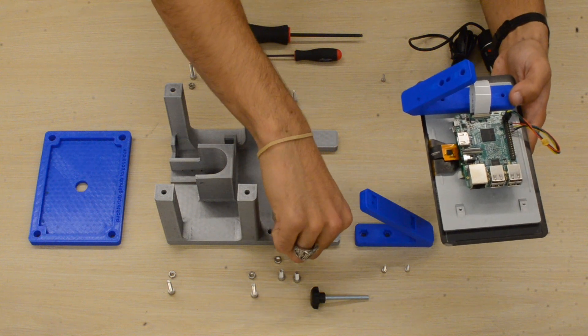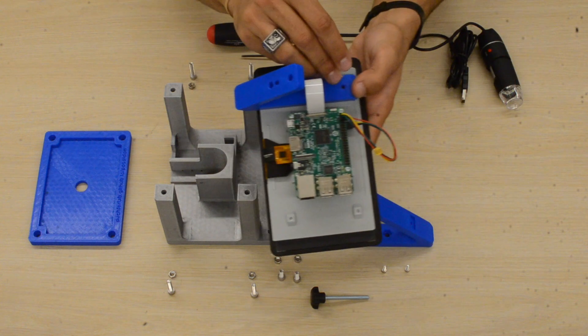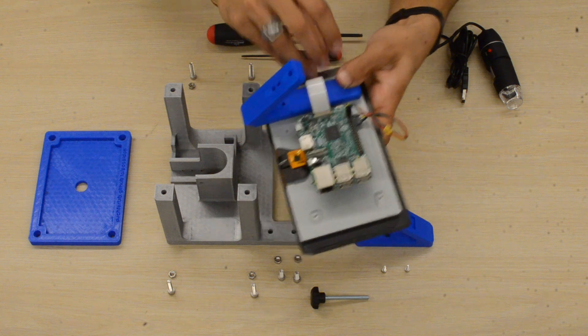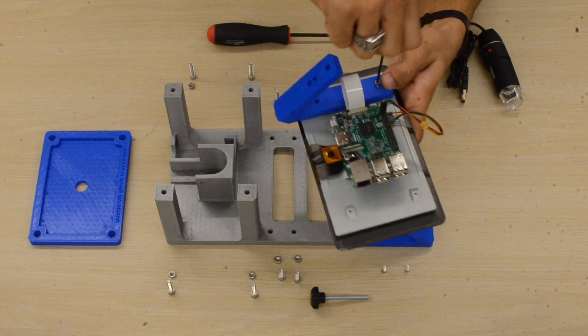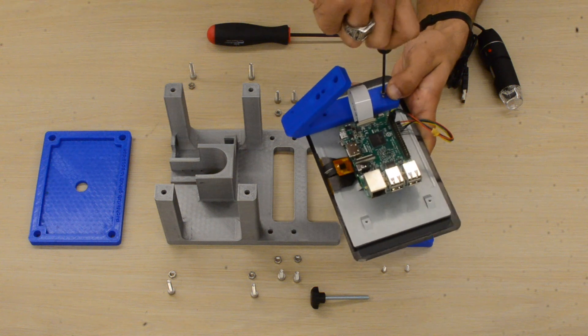Now these screws come with the display itself, so all you have to do is find a screwdriver that's compatible with them. In my case, I use a 2.5 millimeter hex wrench, which is what you see there. You'll go ahead and tighten them down, both the top and bottom.